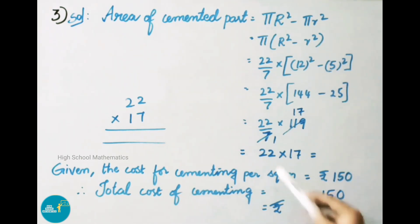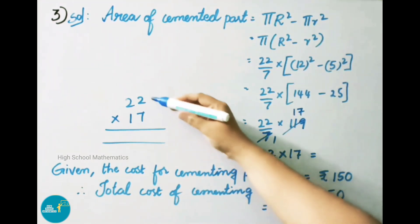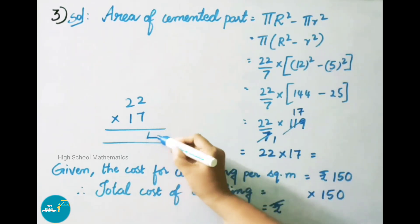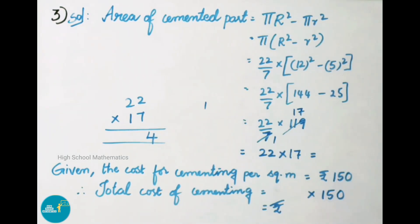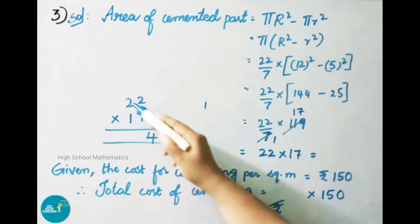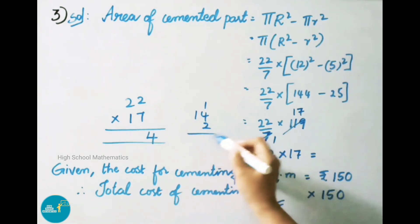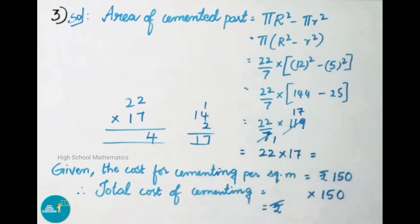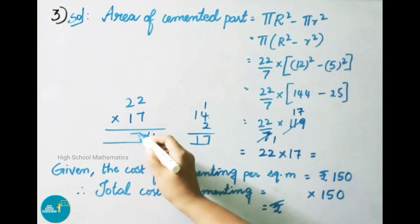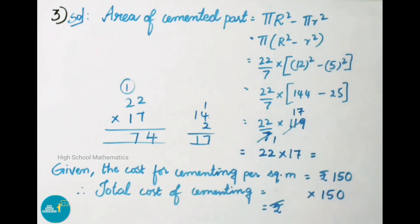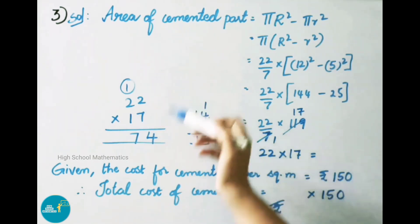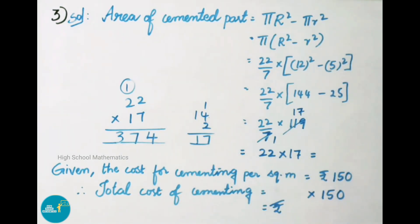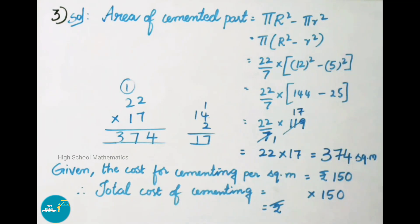Cancellation: 7 × 17 = 119. Now multiply 22 × 17: vertically 7 × 2 = 14, write 4 carry 1; cross multiply 7 × 2 = 14 and 1 × 2 = 2; 4 + 1 = 5, plus 2 = 7, plus carry 1 = 17 giving carry; vertically 1 × 2 = 2, plus 1 = 3. So 22 × 17 = 374 square meters. Therefore, area of cemented part is 374 square meters.